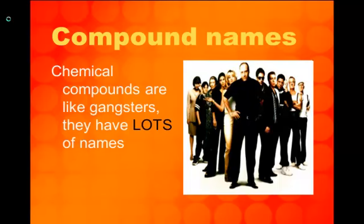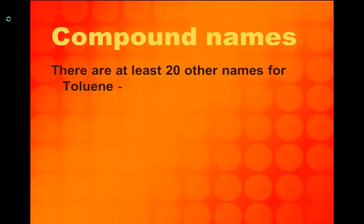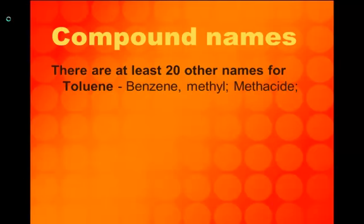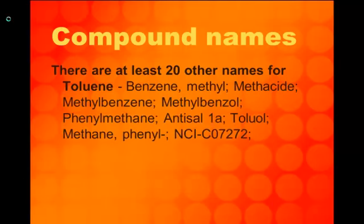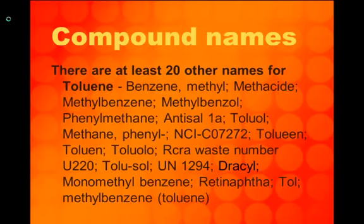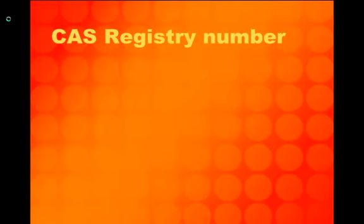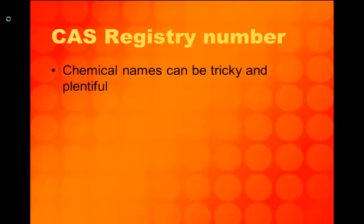Think of salt versus sodium chloride. For example, the compound toluene has at least 20 different names: methylbenzene, methicide, and many more. The CAS registry number is quite possibly the single most useful thing to learn when searching for chemical information. Naming compounds can be tricky and inconsistent, so we needed something better.